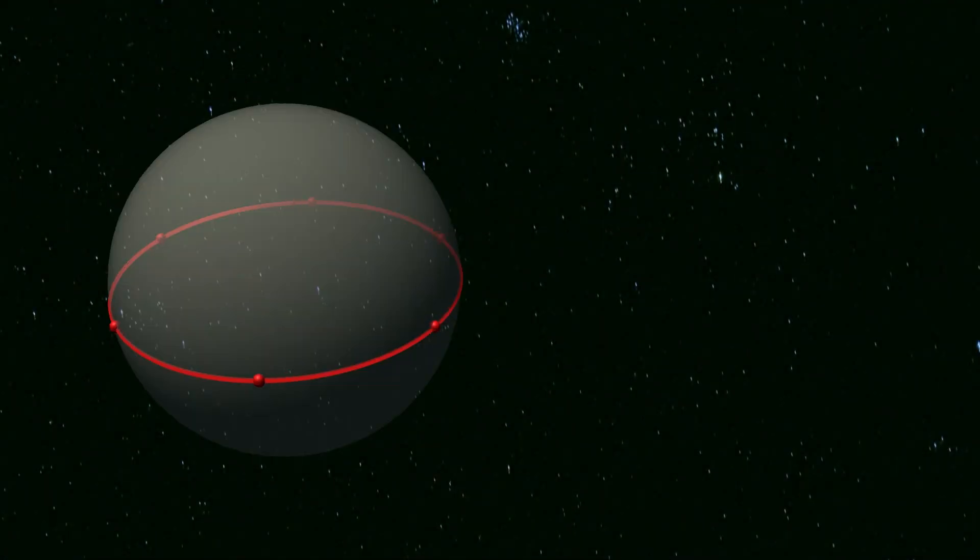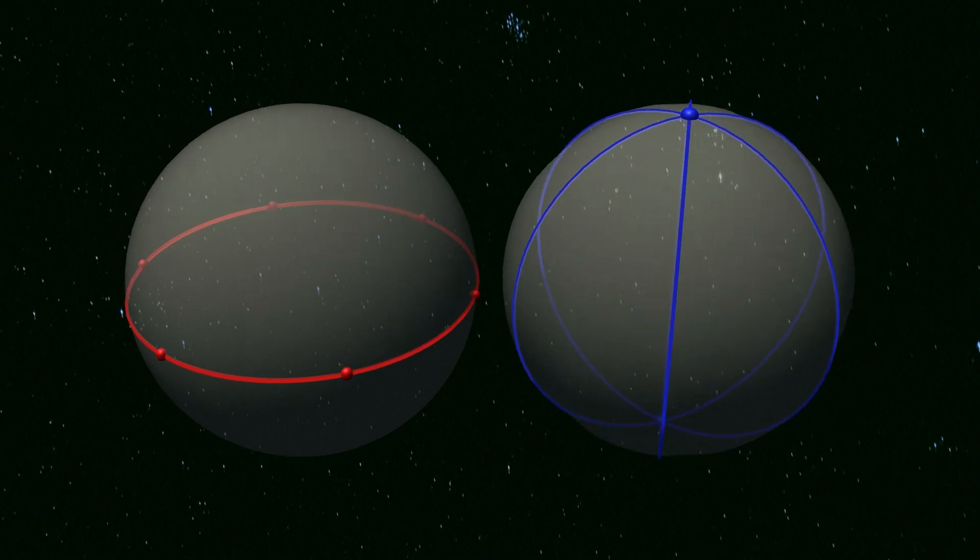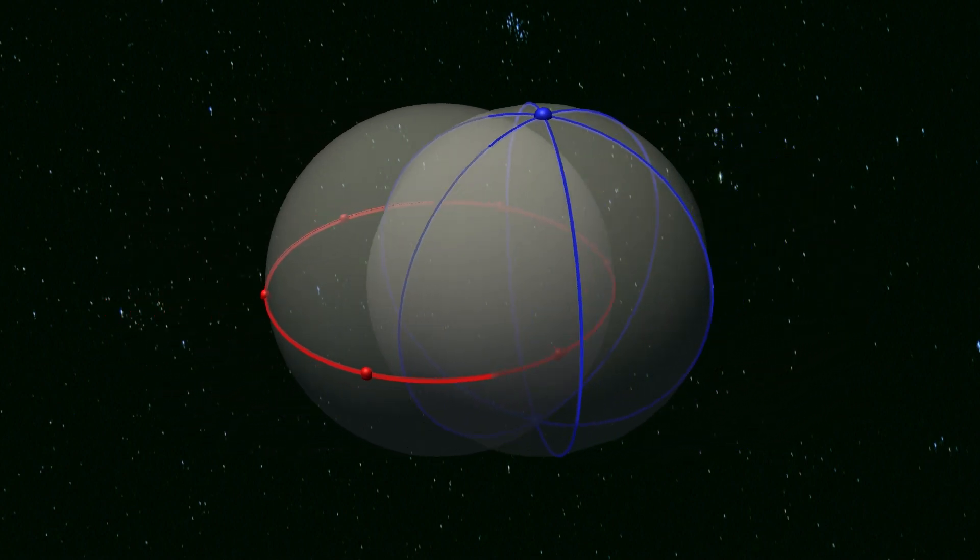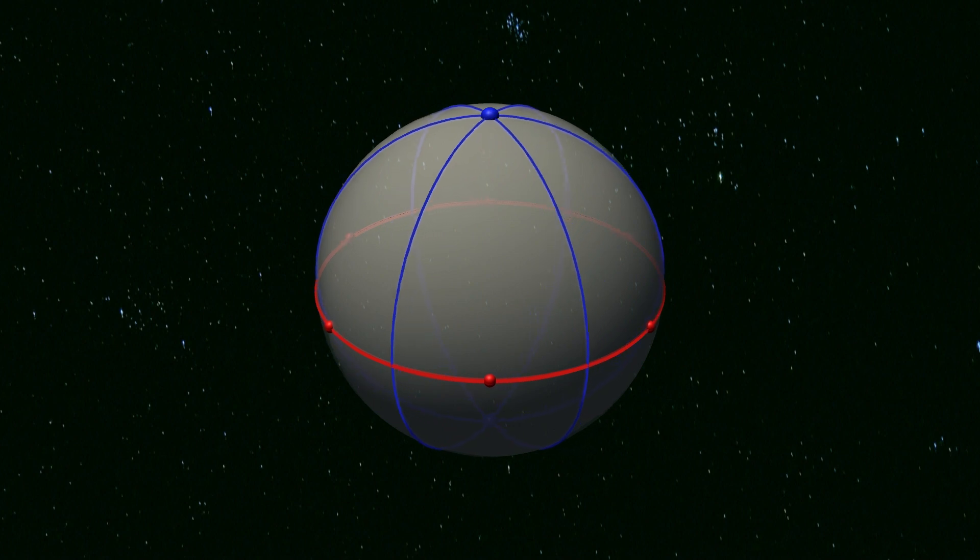If we bring together a spherical dihedron and hossahedron, we can see that they are indeed dual. Each red dihedron vertex lies at the centre of a hossahedron face, and vice versa.